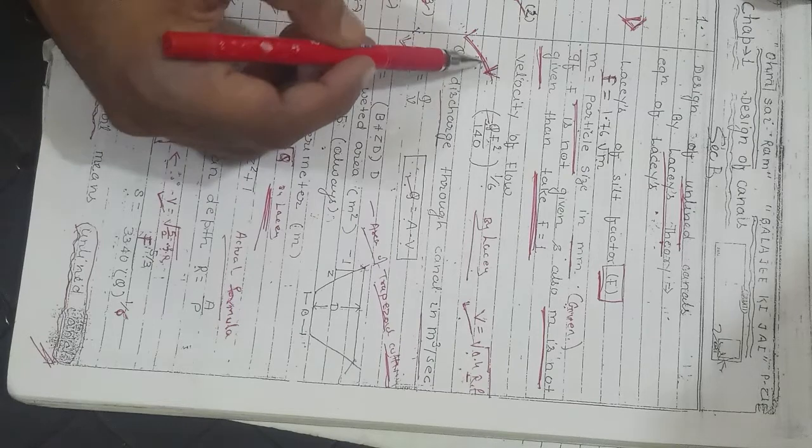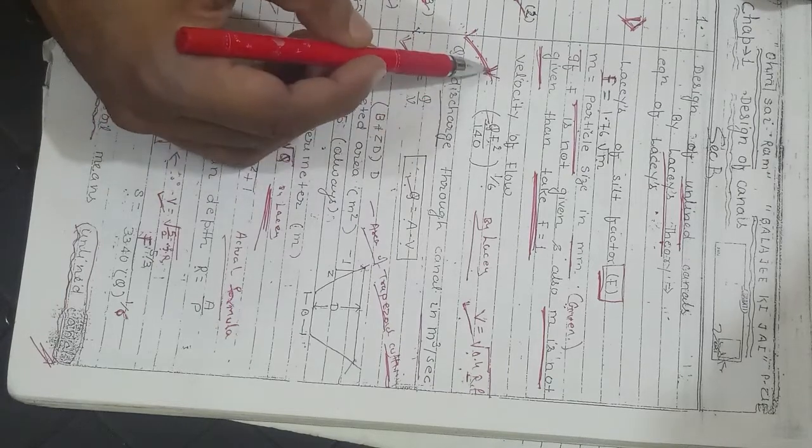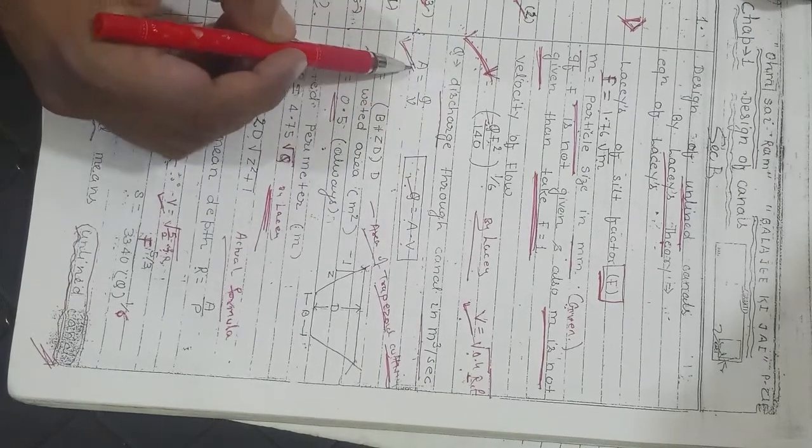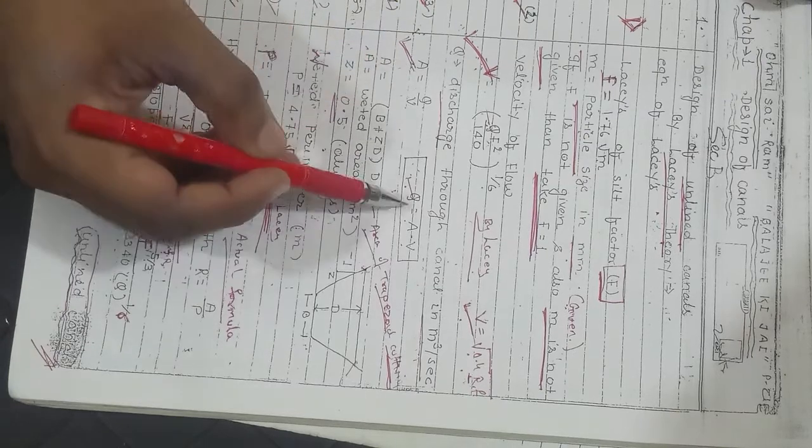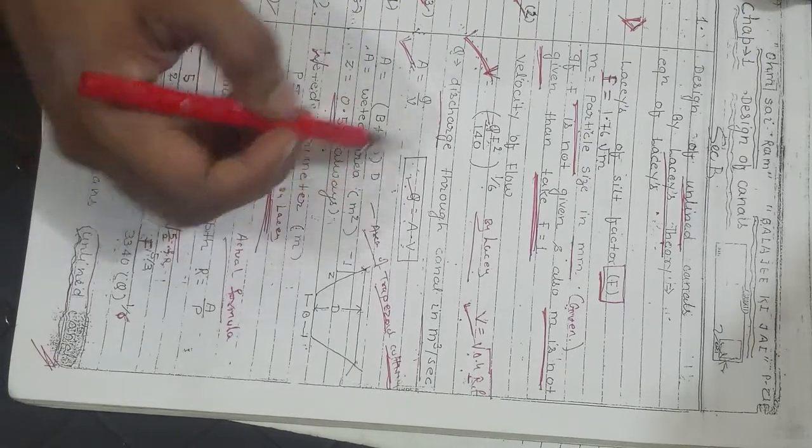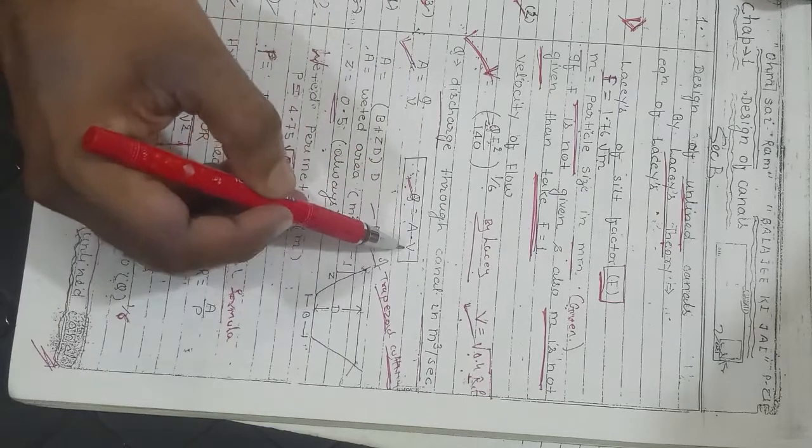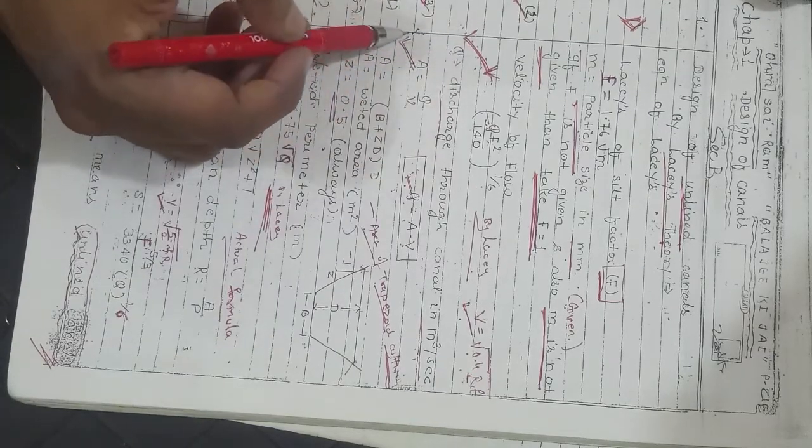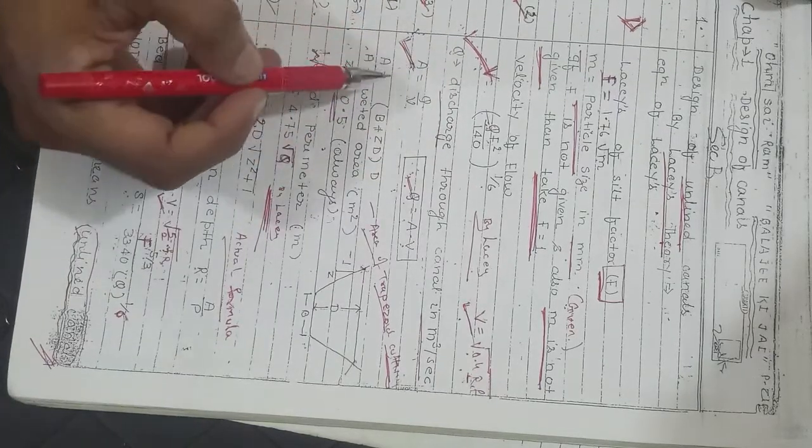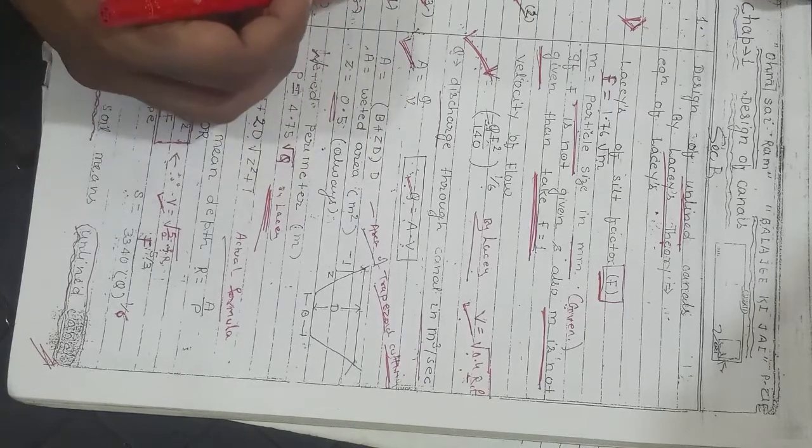Mostly you will have the given value of Q, so you will use this formula for determining V. Since you have Q and V, use the third formula: area. Q = A × V. You have Q given and V determined, you will get A.